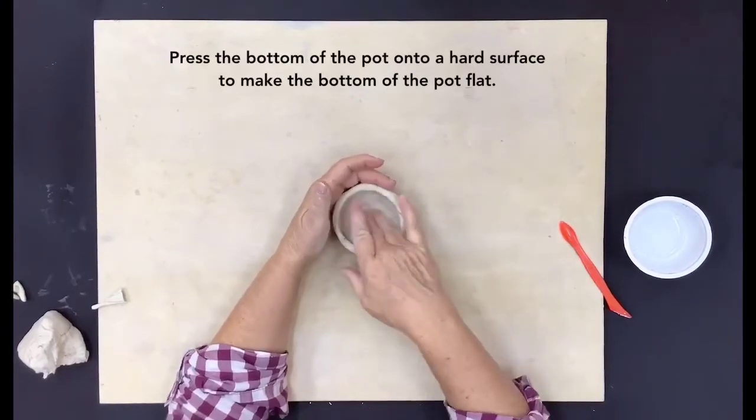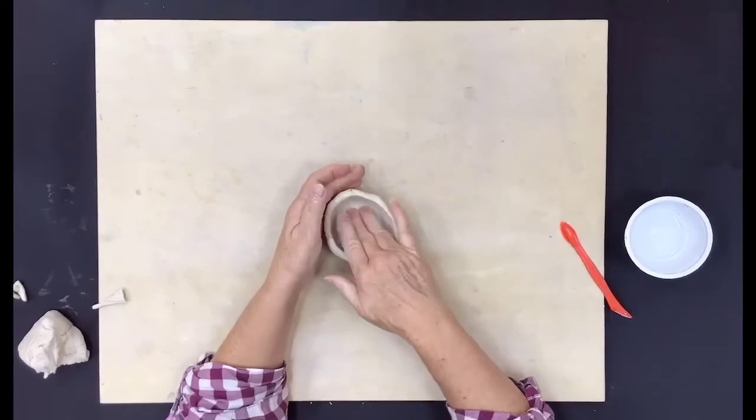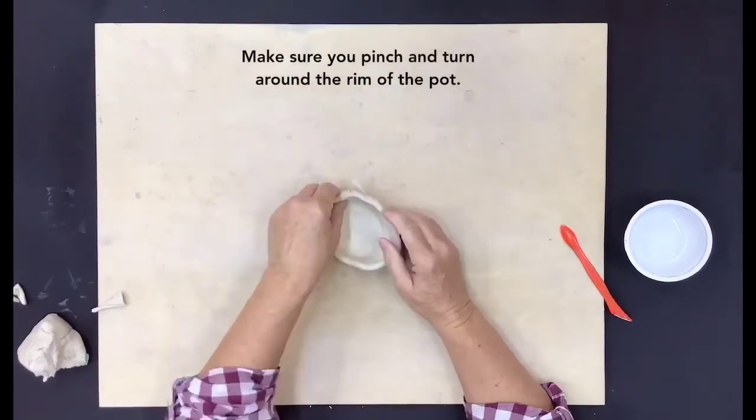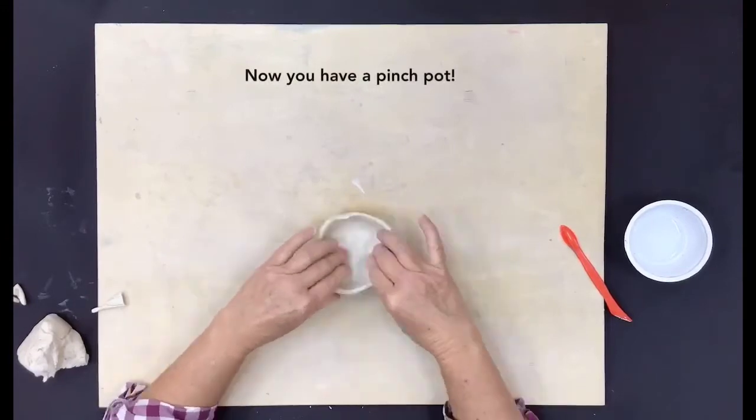Press the bottom of the pot onto a hard surface to make the bottom of the pot flat. Make sure you pinch and turn around the rim of the pot. Now you have a pinch pot.